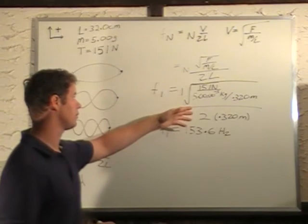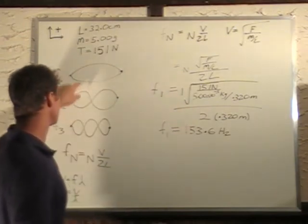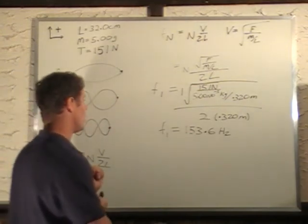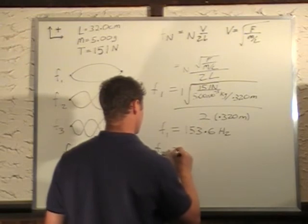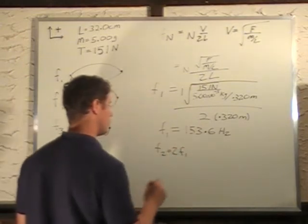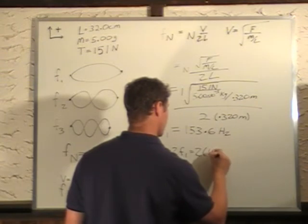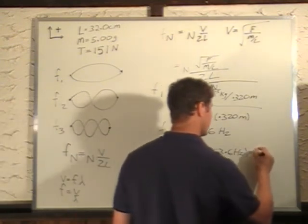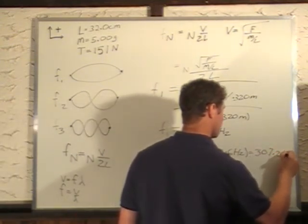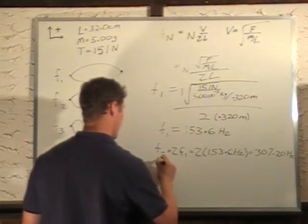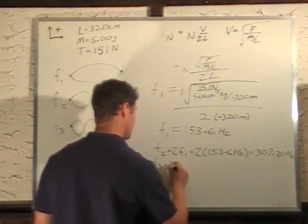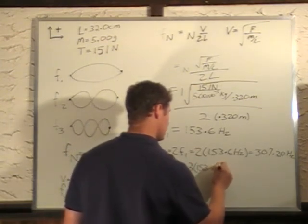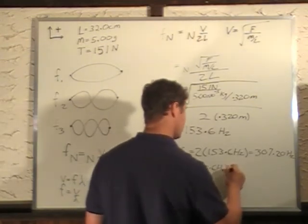Now, f2 is just twice that. We just basically multiply all this stuff by 2 now. And we can see, this is 1, this is 2, and this is going to be 3 times the original. So all we have to do to figure out f2, it's 2 times f1. 2 times 153.6 hertz, which is 307.2 hertz. And f3 is also 3 times f1, 3 times 153.6 hertz, which gives us 460.8.